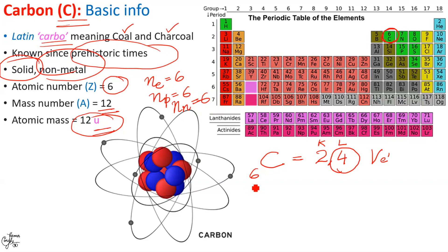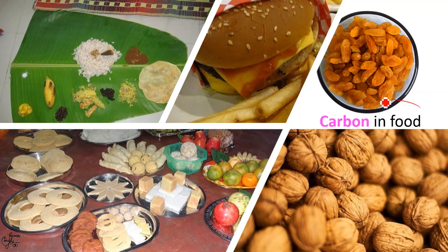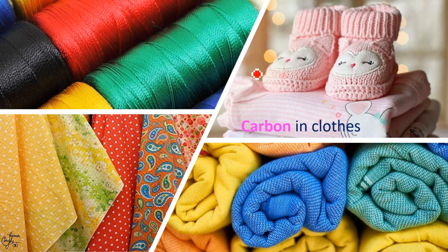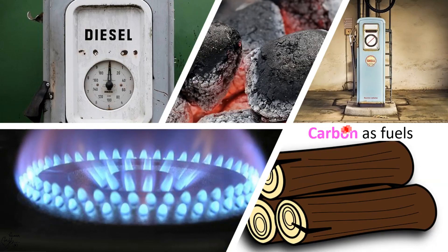Let us summarize the importance of carbon by looking at some more of its applications. Carbon is essential for the existence of all living beings. It is a part of our food — healthy or junk — for example, chapatis, rice, fruits, dry fruits, ice cream, juices, etc. Our clothes such as cotton, linen, silk, nylon, wool, polyester, and rayon are all made up of carbon-containing polymers. The fuel we use in the form of coal, petroleum, methane, CNG, LPG, and kerosene are all carbon compounds.